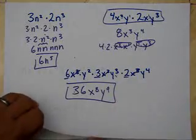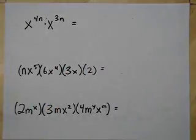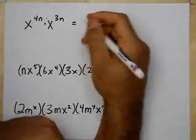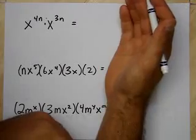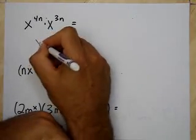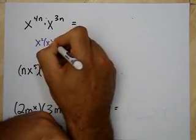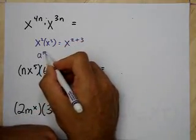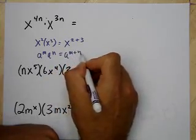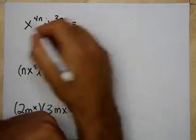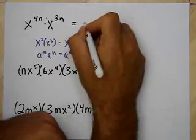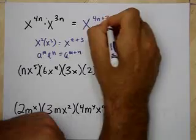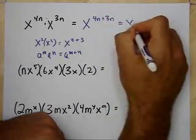I could count them all up, but why would I? Now, x to the 4n times x to the 3n. Well, I know x squared times x to the 3rd gives x to the 2 plus 3. The rule is aᵐ times aⁿ equals a to the m plus n. These have the same base, so I can keep that base and add the exponents: 4n plus 3n, which equals x to the 7n.